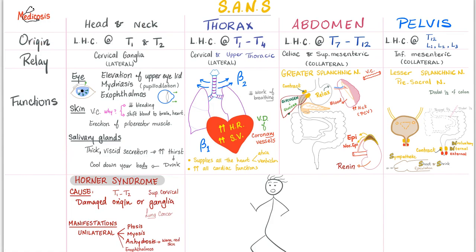Sympathetic function. Head and neck. Origin, lateral horn cell at T1 and T2 only because we're just going to head and neck. Relay in the highest most ganglia. Cervical ganglia. Especially the superior cervical ganglia. This is part of the lateral. This is paravertebral. Functions in the eye. Three functions. Elevation of your upper eyelid. Mydriasis, which is dilation of the pupil. And exophthalmos, which is protrusion of the eyeball.